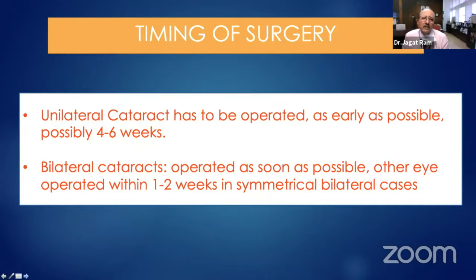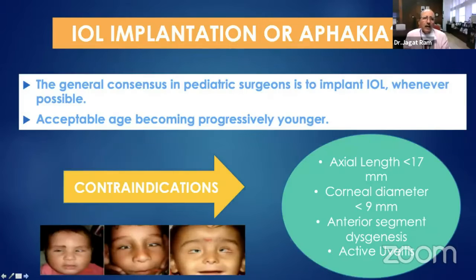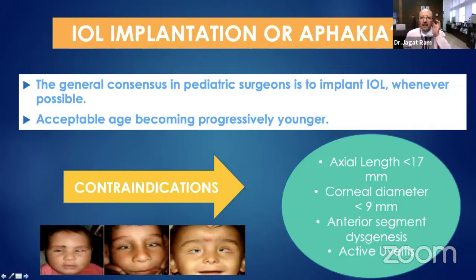We operate as early as 4 to 6 weeks — mostly at 6 weeks or so, when the child is okay for anesthesia. For bilateral cataract, we keep a gap of 2 to 4 weeks between operating the two eyes. Contraindications for IOL implantation include axial length less than 17 mm, corneal diameter smaller than 9 mm, anterior segment anomaly, or active uveitis. The general consensus for pediatric surgeons is to implant IOL wherever possible, wherever there is no contraindication, and the acceptable age is becoming progressively younger.